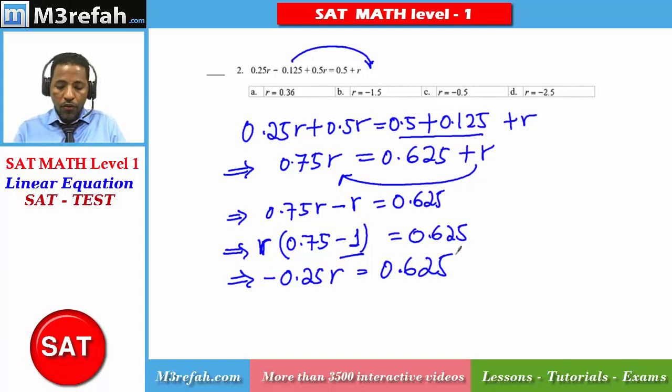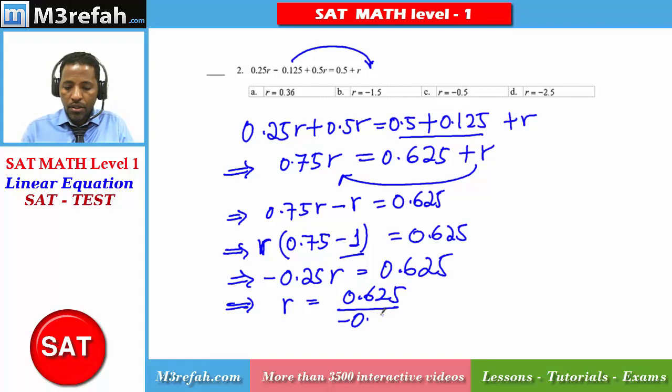Our target is to find the value of r so you have to divide both sides by negative 0.25. r is equivalent to 0.625 divided by negative 0.25.